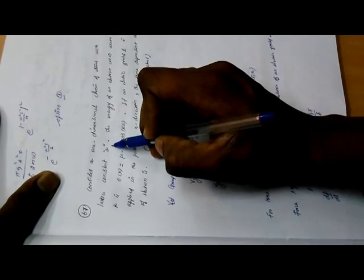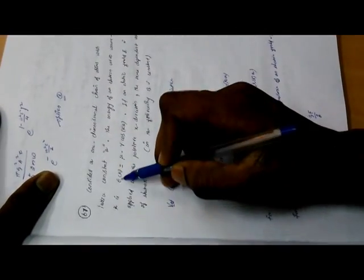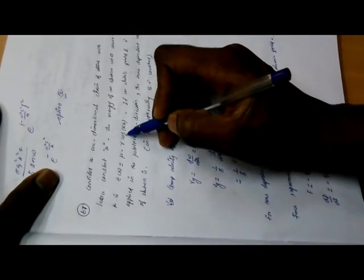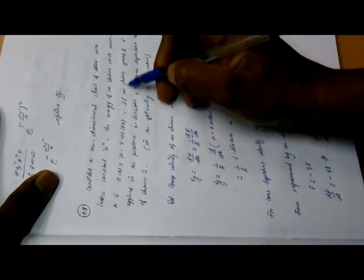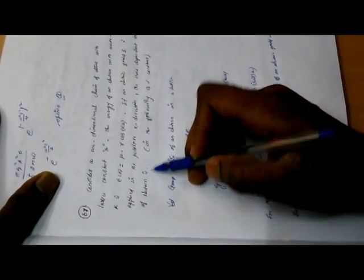Consider a one-dimensional chain of atoms with lattice constant a. The energy of an electron with wave vector k is E(k) = μ - γ cos(ka). If an electric field is applied in the positive x direction, find the time-dependent velocity of the electron.